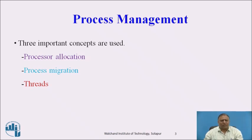Process Allocation means it decides which process should be assigned to which processor. Process Migration deals with the movement of a process from its current location to the processor to which it has been assigned.